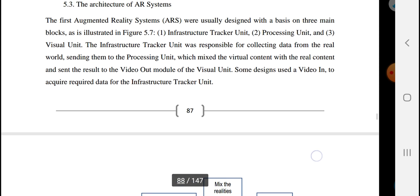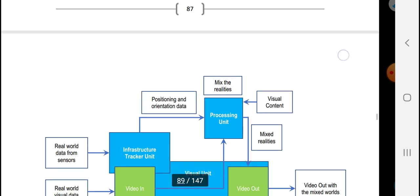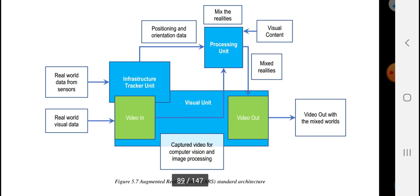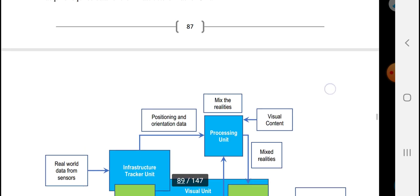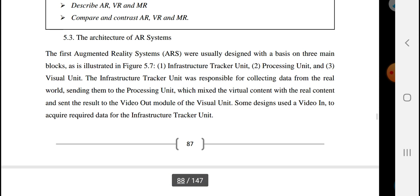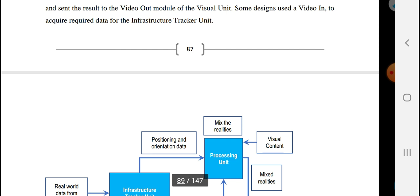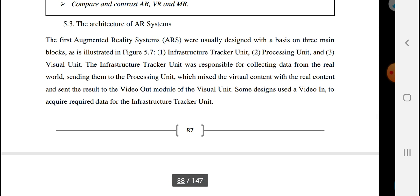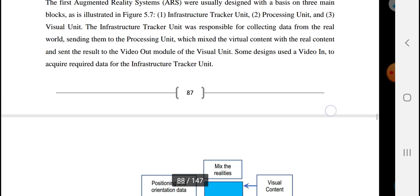So the first building block is the infrastructure tracker unit. The second one is the processing unit. The third one is the visual unit.